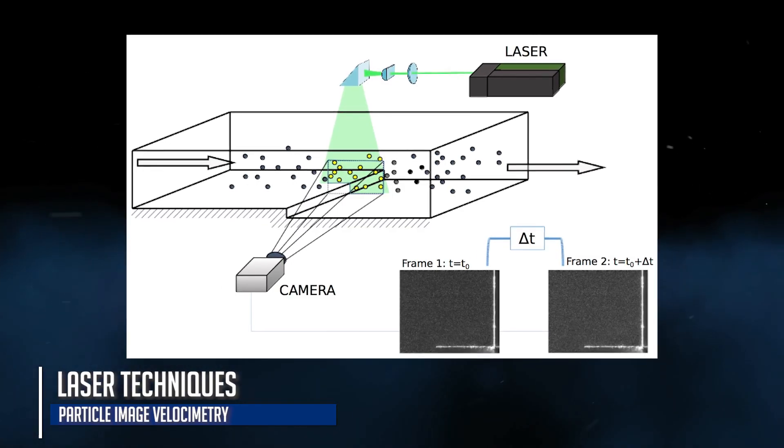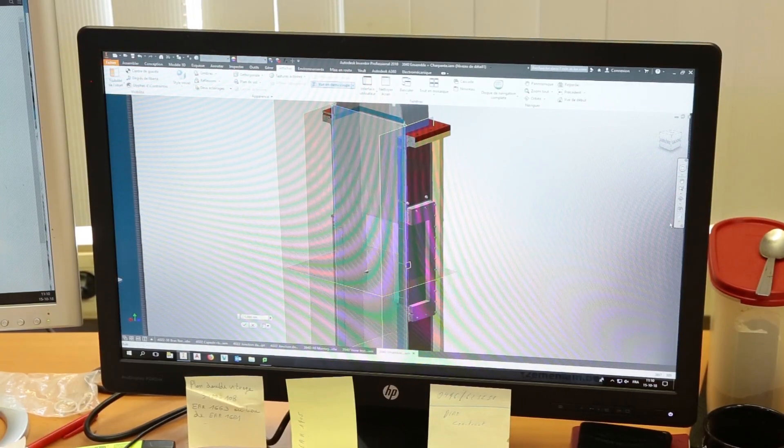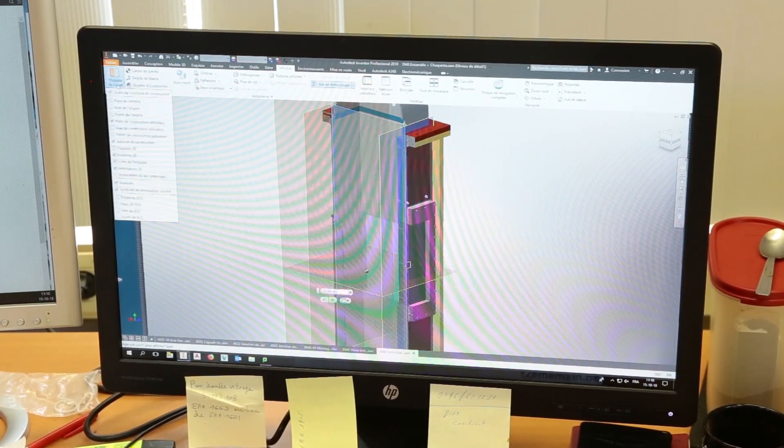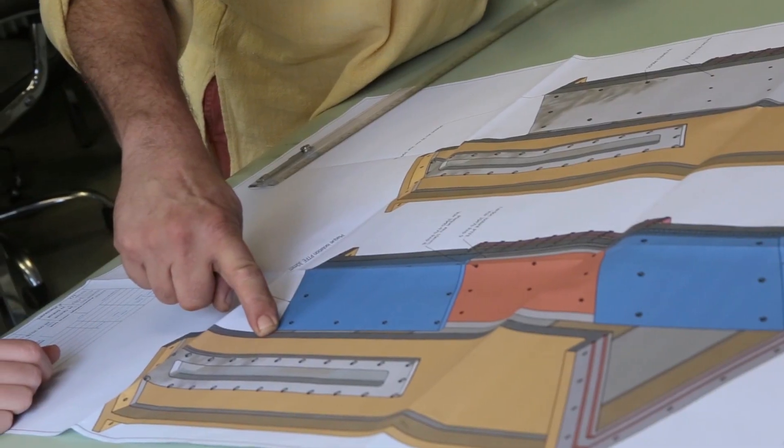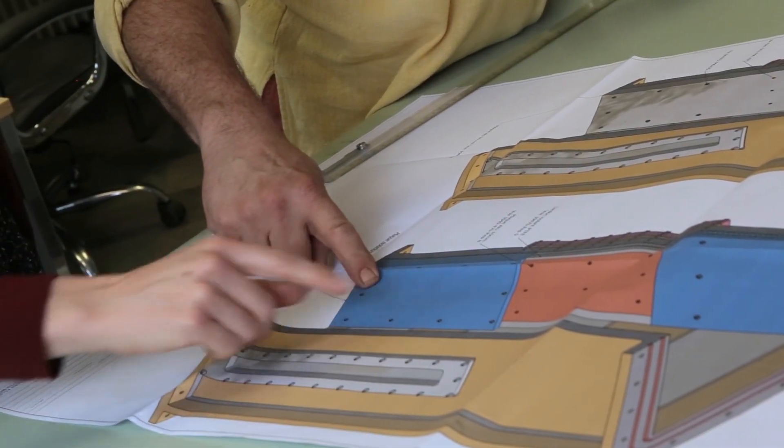Here laser techniques have been applied to characterize the flow field over a backward facing step. The facility has been designed to be completely sealed in order to test with a helium-xenon gas mixture that has thermal properties as close as we can get to liquid metals for a transparent medium.